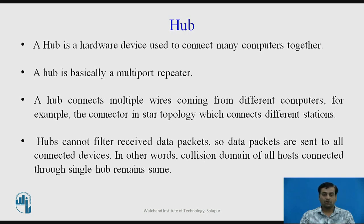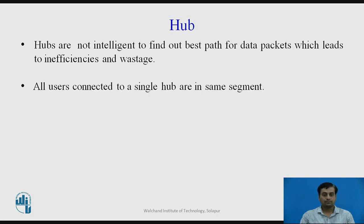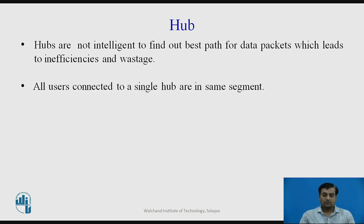The collision domains of all hosts connected through a single hub remain the same — corrupted or collided data on one port is broadcasted by the hub to all other ports as well. Hubs are not intelligent enough to find the best path for data packets, which leads to inefficiencies and wastage. All users connected to a single hub are in a single segment, causing unnecessary wastage of bandwidth.